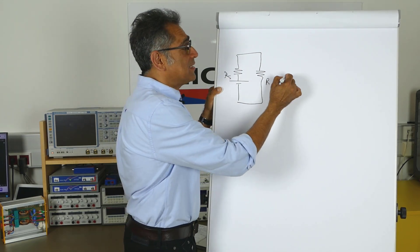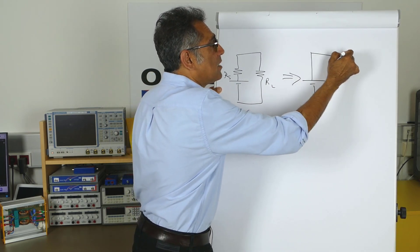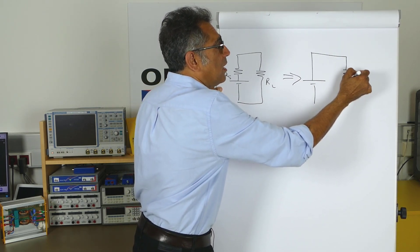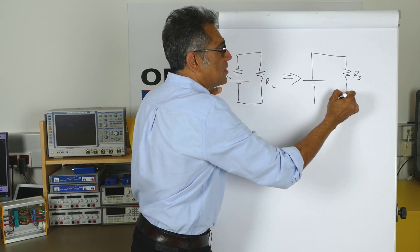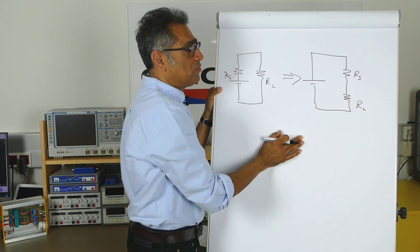I'm going to redraw that so that it looks easier to see. Here I've got RS, my source resistance, and here is my RL, my load resistance.